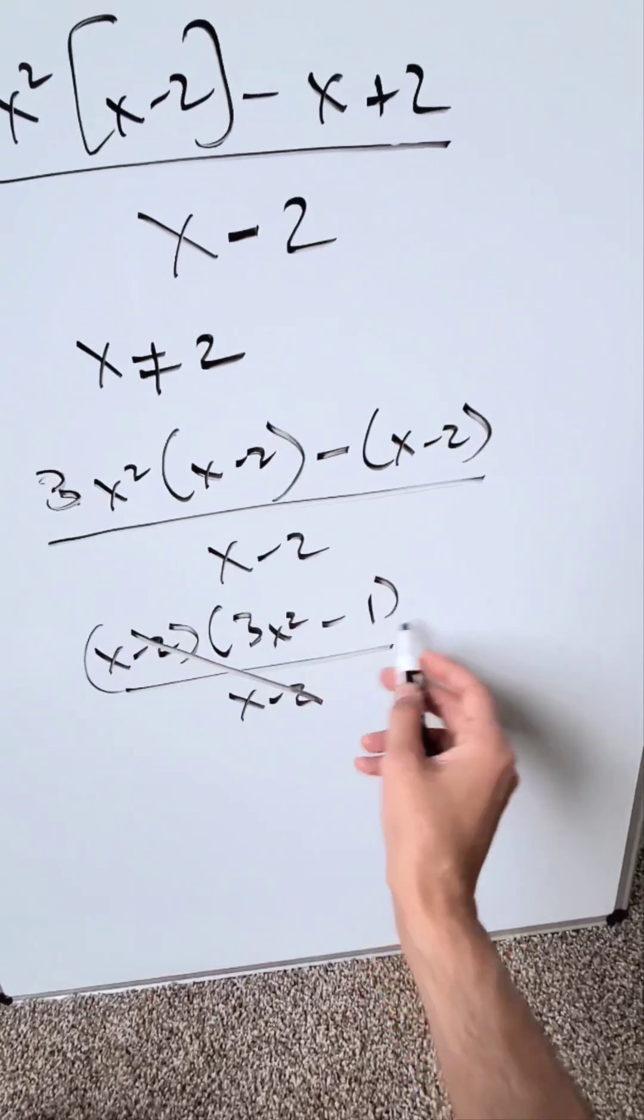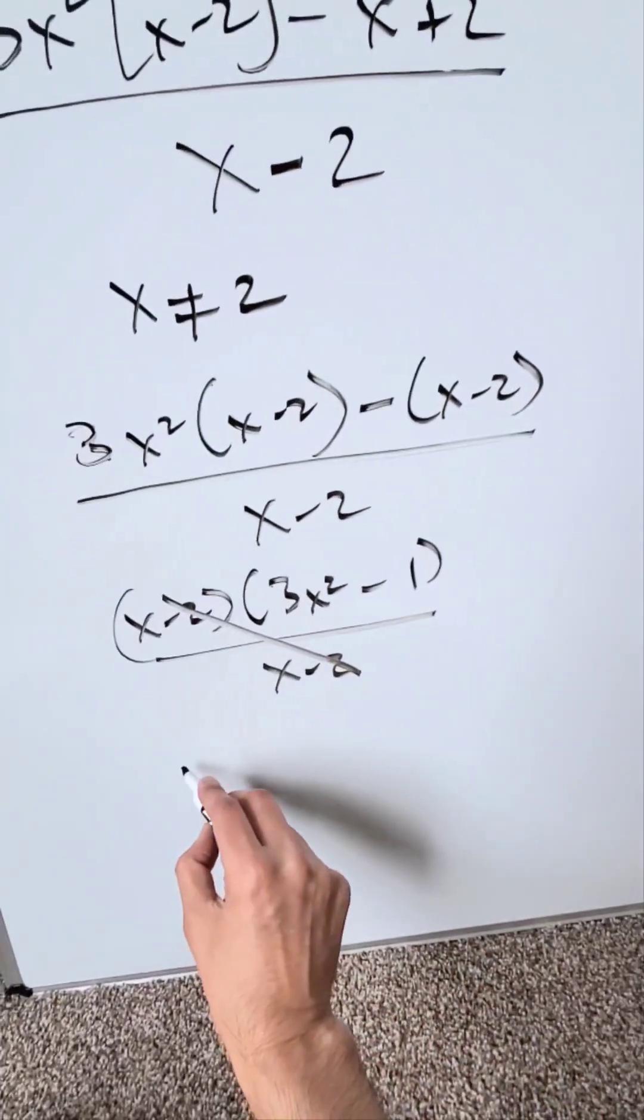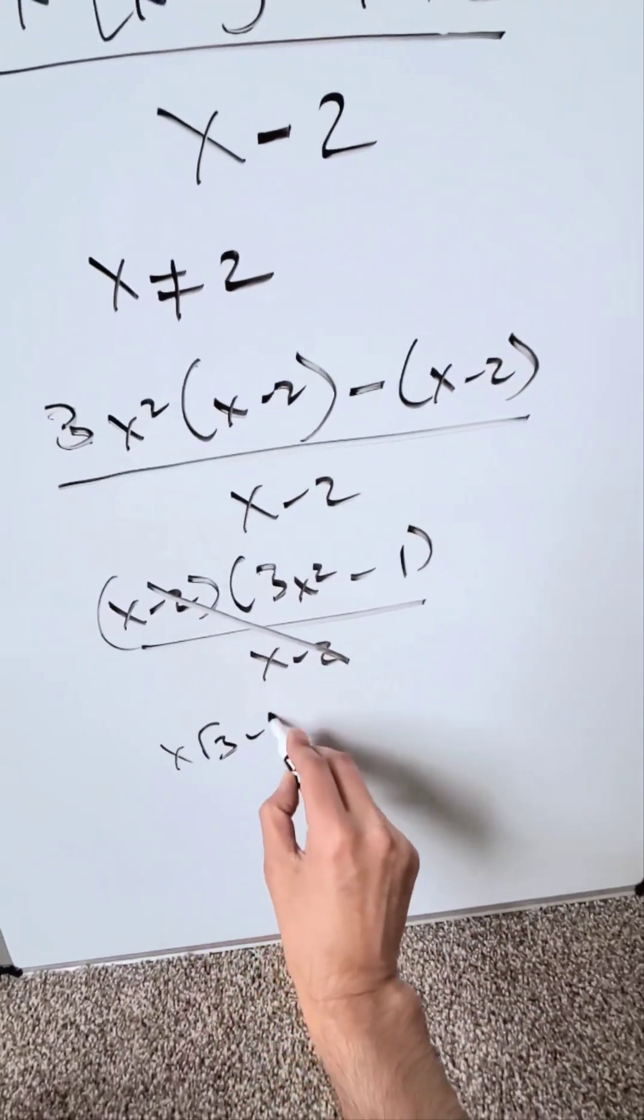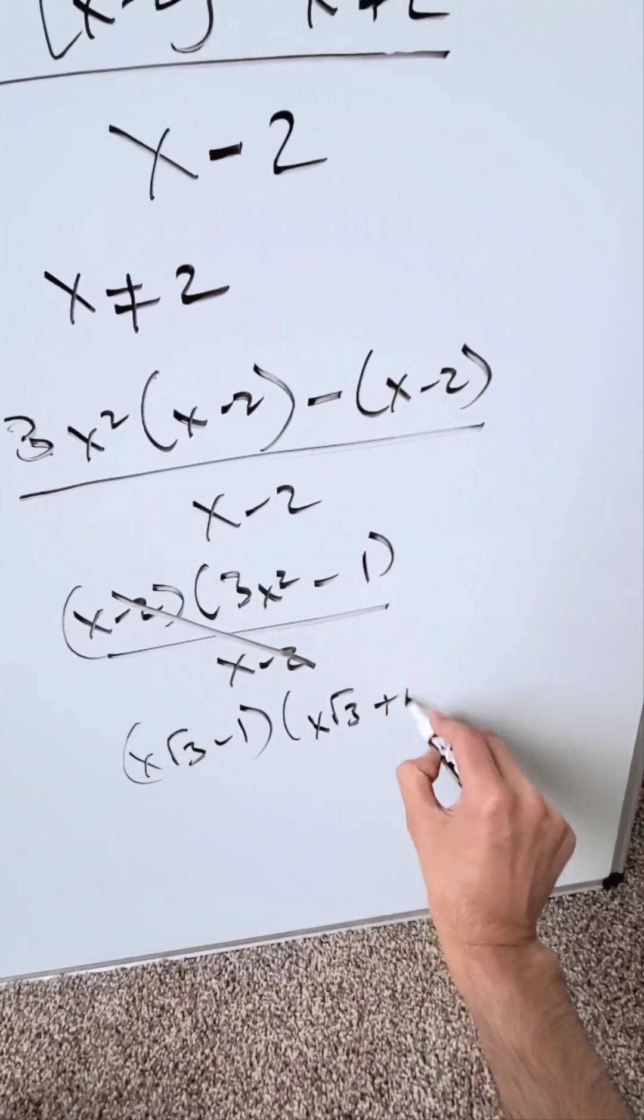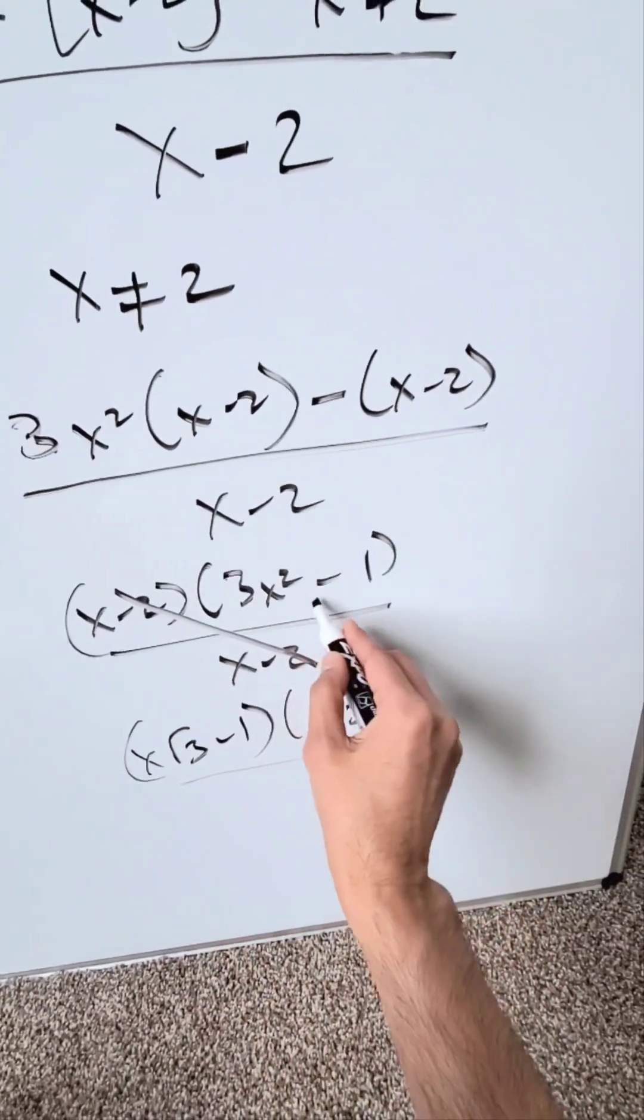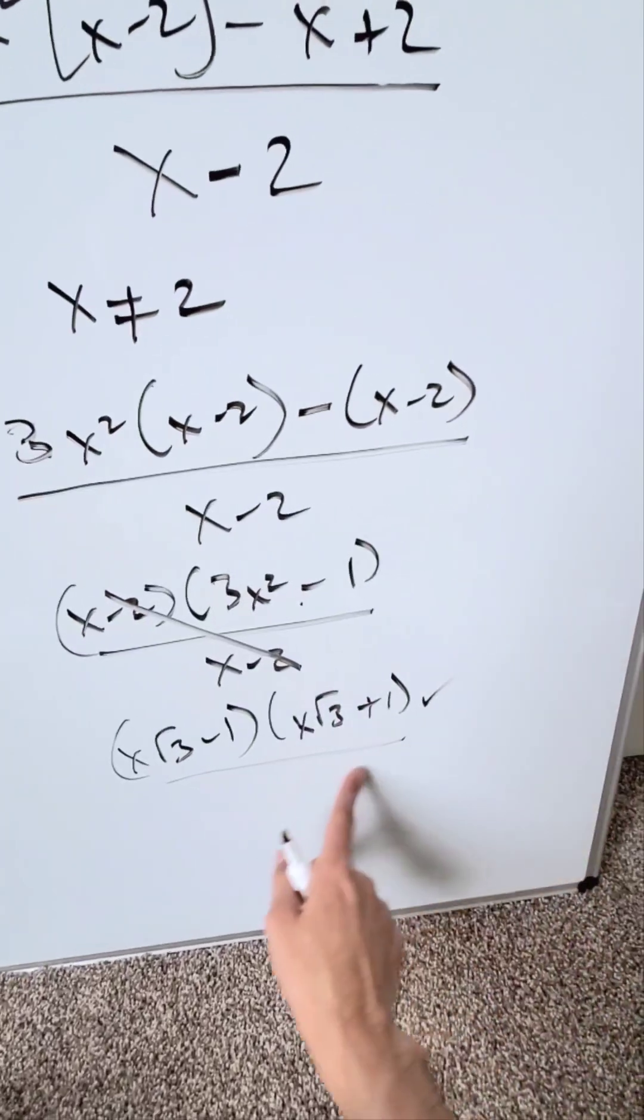Which you know to be a squared minus b squared. You can easily factor it. You'll have (x root 3 minus 1) and then (x root 3 plus 1). If you were to multiply this right here, you'll end up with 3x squared minus 1, but these right here are your factors.